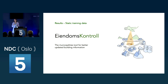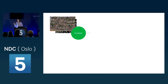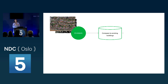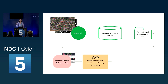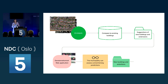We created an application called Eindomskontroll — meaning 'property control' — a tool for municipalities to get better updated building information. Our AI analysis runs predictions for an entire municipality, then compares results to existing buildings to find what the AI detected that isn't already in the data. This gives us suggestions of new buildings and building extensions, which are fed into an application where the municipality can assess which detections are wrong or correct.